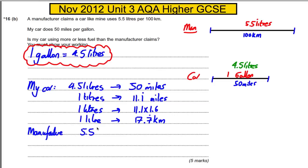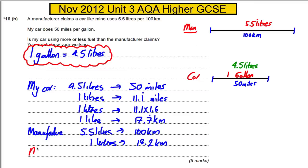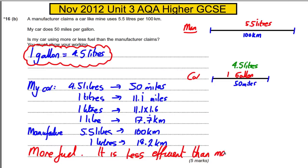The manufacturer's claim is that 5.5 liters covers 100 kilometers, so one liter covers 100 divided by 5.5, which is 18.2 kilometers. My car only achieves 17.7 kilometers per liter, so I go less far per liter. That means my car is using more fuel than the manufacturer claims — it is less efficient than the manufacturer's claim.